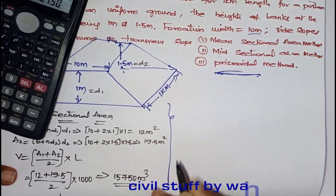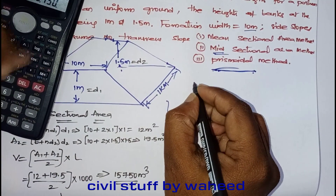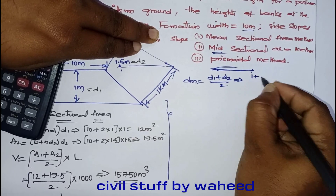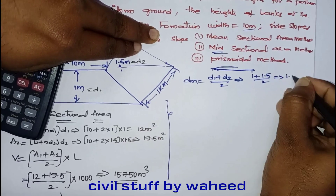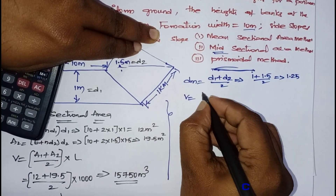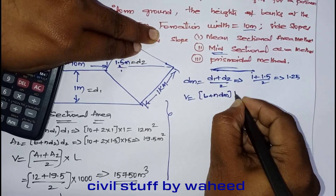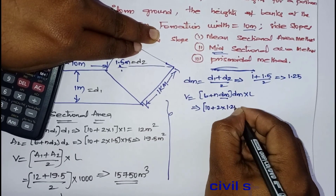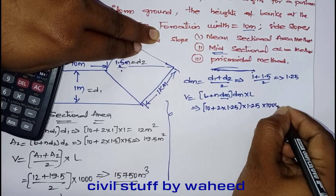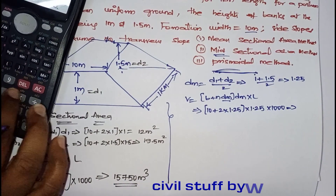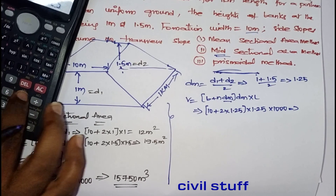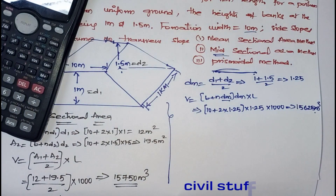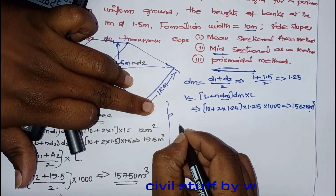Method 2 — Mid-Sectional Area Method: First calculate average depth dm = (d1 + d2)/2 = (1 + 1.5)/2 = 1.25 meters. Volume = (b + n×dm) × dm × L = (10 + 2×1.25) × 1.25 × 1000 = 15,625 cubic meters.